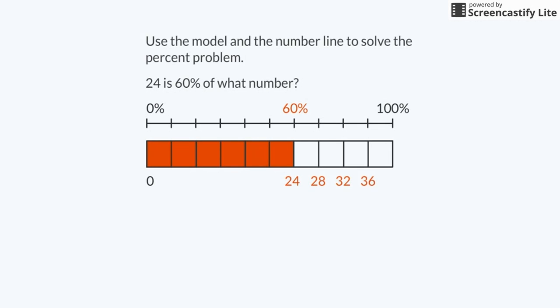28, 32, 36, 40. The whole is 40. 24 is 60% of 40. So my shoes originally cost $40.